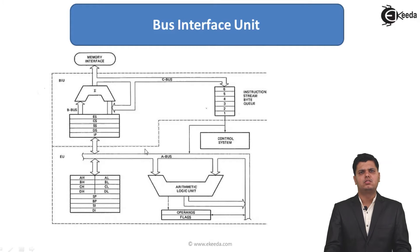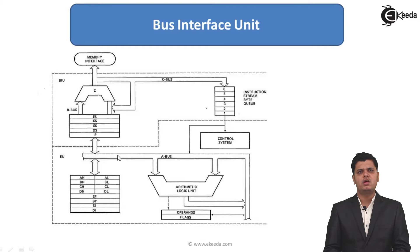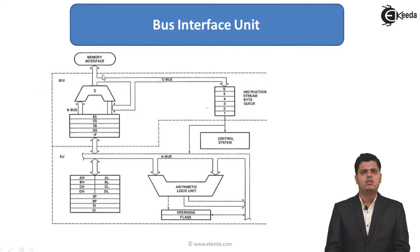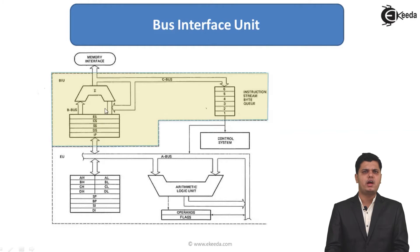We have seen the physical address generation. The 16-bit data stored in the segment register and 16-bit offset address stored in the instruction pointer are used in the bus interface unit. An adder in the BIU takes data from the code segment register, data segment register, stack segment register, and instruction pointer to generate the 20-bit physical address.